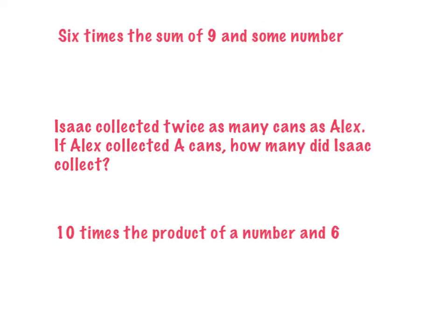Some number is the unknown, so I'm going to start with that and call it n. I have to make it 6 times the sum. I know I'm adding 9 and some number, so I'm going to write n plus 9 to show the sum of 9 and some number. And then I know I need to do that times 6, so I'm going to put that in parentheses and write times 6.